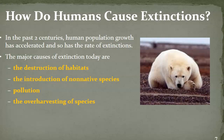How exactly do we cause extinctions? Our human population growth has accelerated astronomically over the past two centuries, and so has the rate of extinctions, because when we have more people, we take over habitats previously populated by other organisms. The four major causes of extinction today are the destruction of habitats, the introduction of non-native species — sometimes accidental, sometimes on purpose — which take over and use all the resources of existing organisms, pollution, and the over-harvesting of species.